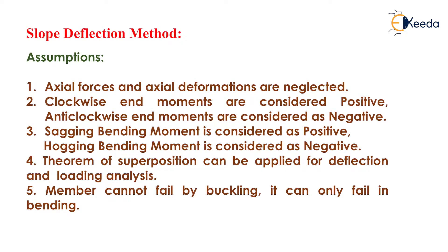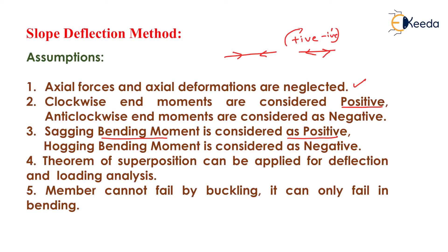The assumptions used in the slope deflection method are: first, axial forces and axial deformations are neglected — that is, axial compression as well as tension are neglected. Second, clockwise end moments are considered positive and anti-clockwise end moments are considered negative. Third, sagging bending moment is considered positive and hogging bending moment is considered negative.